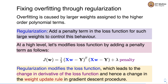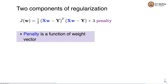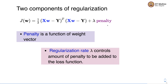Regularization has modified the loss function. Since we modified the loss function, we use the partial derivative of the loss function with respect to the weight vector in gradient descent computation. The partial derivative will also change, and that will result in a change in the update rule in the gradient descent. There are two components of regularization: the penalty term, which is a function of the weight vector, and the regularization rate. As we increase the magnitude of certain components in the weight vector, the penalty goes up, and the regularization rate controls the amount of penalty added to the loss function.